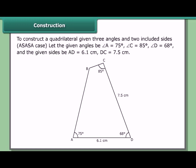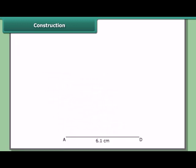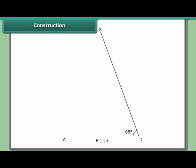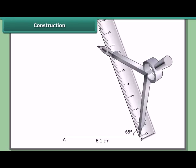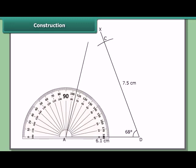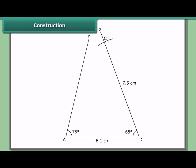Here we can construct the quadrilateral directly without dividing it into two triangles. Construct AD = 6.1 cm. At D, draw angle ADX = 68°. With D as center and radius 7.5 cm, cut off DC = 7.5 cm on ray DX. At A, draw angle DAY = 75°. At C, draw angle DCZ = 85°. Let the arms meet; ABCD is the required quadrilateral.